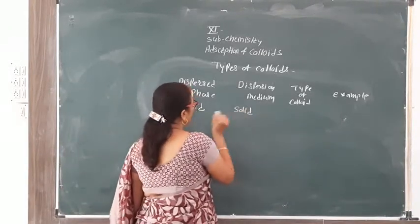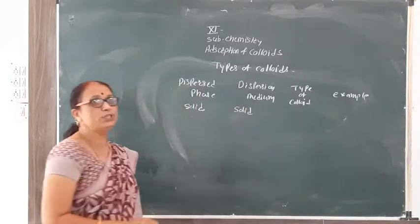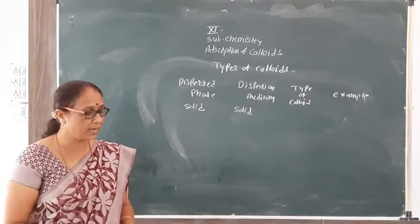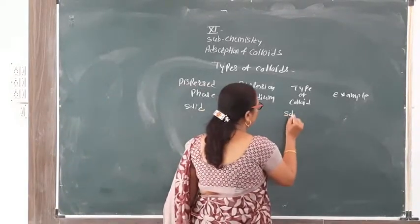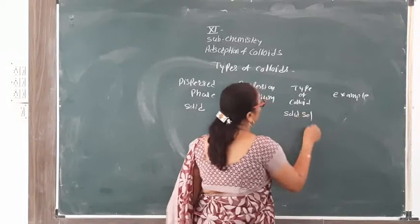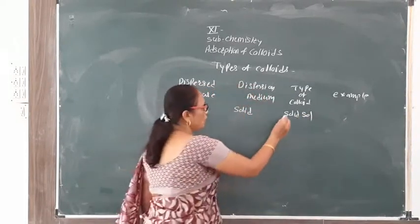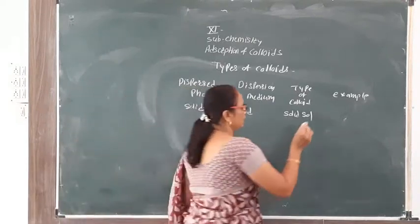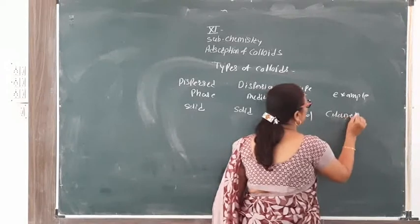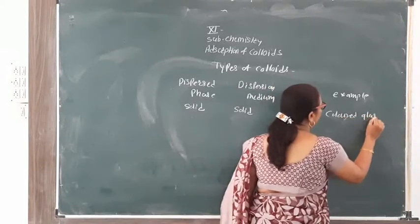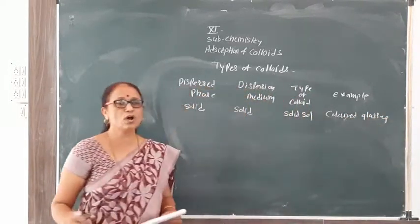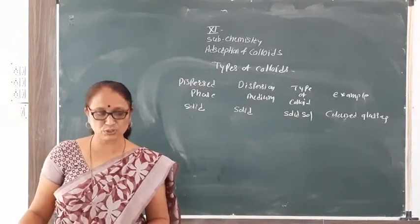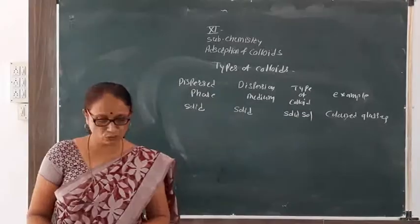When the dispersed phase is solid and the dispersion medium is also solid, this is a solid-in-solid type of colloid called a solid sol. Examples of solid sol are colored glasses, gemstones, and porcelain.